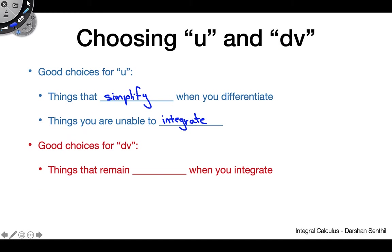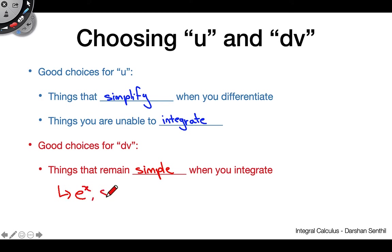When one part of the integral isn't something you can integrate on its own, make it your u — because you can at least take a derivative. For dv, anything that remains simple when you integrate it is ideal. Three of the biggest players you'll see as dv are e^x, sin(x), and cos(x), because no matter how many integrals you take, they don't get much more complicated.